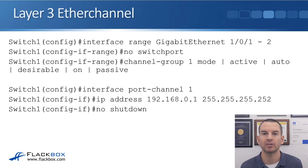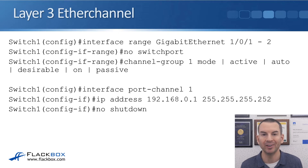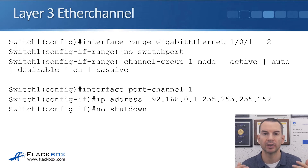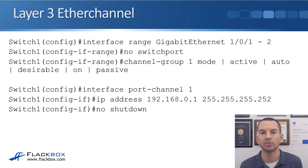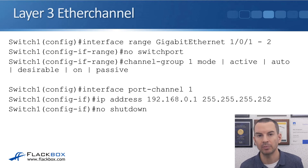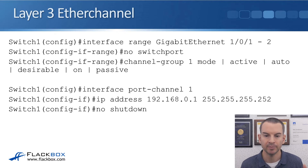The only difference is that we make the ports a layer 3 port with the 'no switchport' command. That's a standard command you can use on a layer 3 switch, whether you're using EtherChannel or not, to designate that the port is a layer 3 port so that you can put an IP address on it.